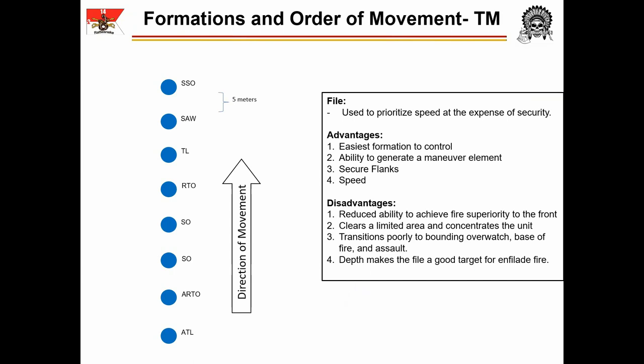Focus now on the team file. The team file is used to prioritize speed at the expense of security. Soldiers will be no closer than 5 meters together in order to mitigate the effects of surprise attacks, especially grenades. The kill radius of a grenade is 5 meters. By maintaining this spacing, a grenade will do significantly less damage to the unit as a whole. The file is designed to place the SSO, or Senior Scout Observer, in the lead, where he can conduct land navigation and route selection for the unit most effectively.